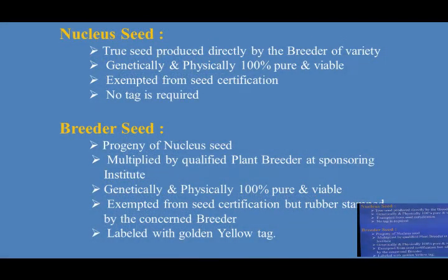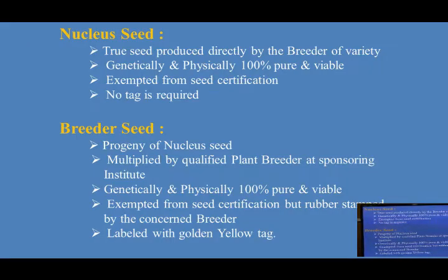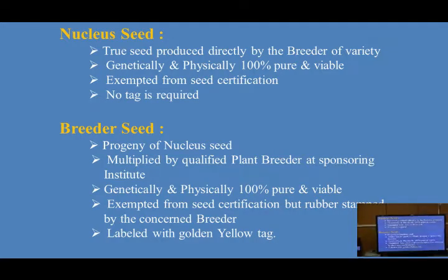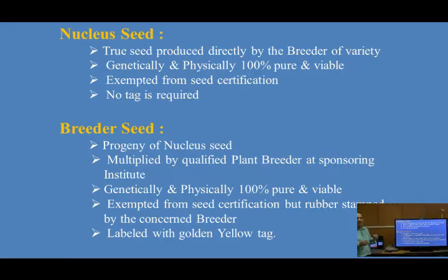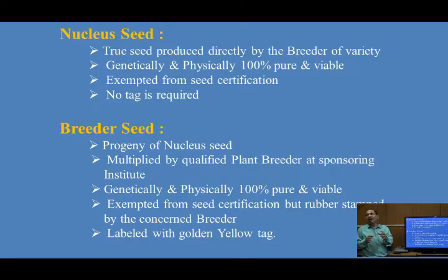Based on genetic quality, seeds are classified in different parts: nucleus seeds, breeder seeds, foundation seeds, certified seeds, and truthfully labeled seeds. Nucleus seeds — just as the nucleus is important in a cell, nucleus seeds are much more important in seed technology. It is vital to maintain genetic purity and it is true to seeds produced directly by the breeder of the variety. It is the asset of the breeders who developed the variety. It is genetically and physically 100% pure.